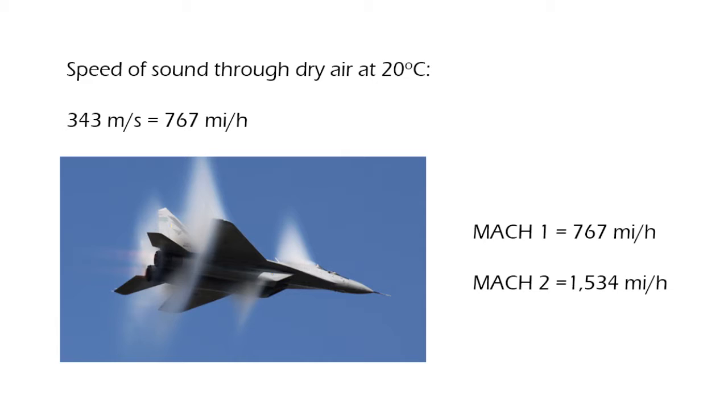A supersonic plane traveling at Mach 1 speed travels at 767 miles per hour. If it travels at Mach 2, then it goes at double that speed, which is 1534 miles per hour. What is seen in the image is a plane breaking the sound barrier, and those clouds are seen because breaking the sound barrier causes condensation in the air surrounding the plane.